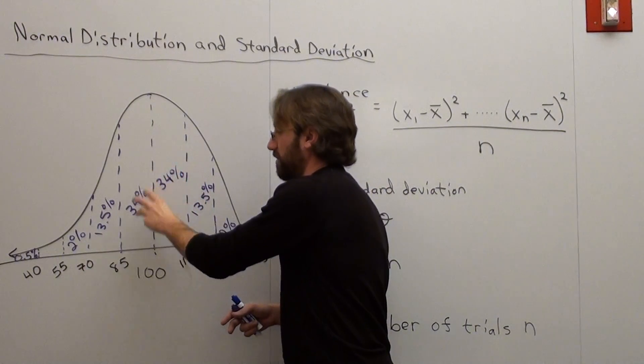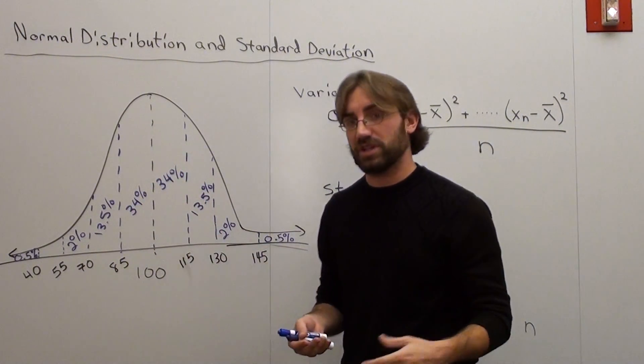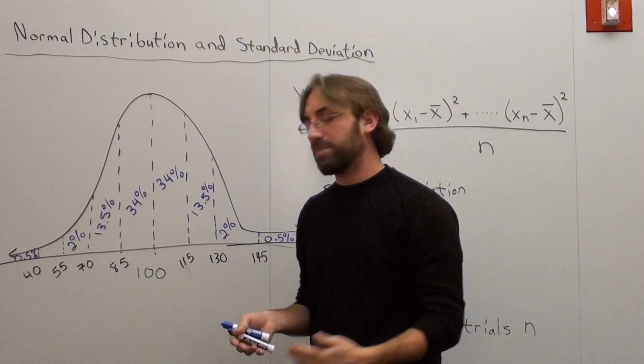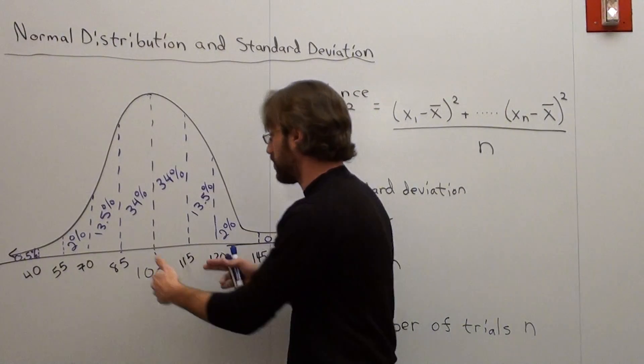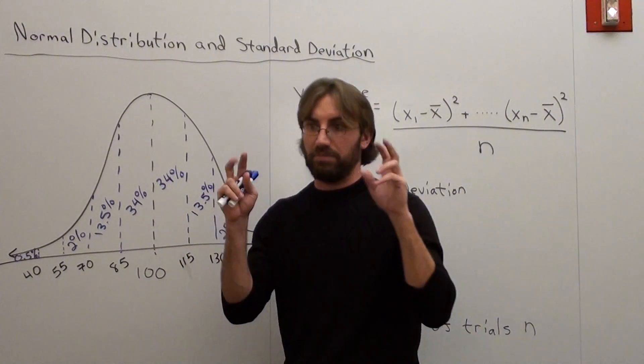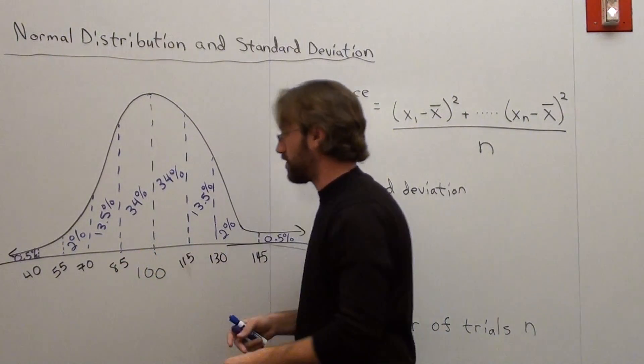If you fall in between the 100 to 115 category, you're in 34% of the population. If you're in 85 to 100, you fall in the other 34% of the population. Most of the population falls within one standard deviation of 100 of the normal IQ. That's 68% of the population.